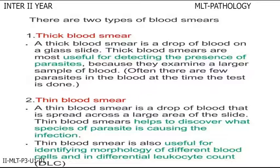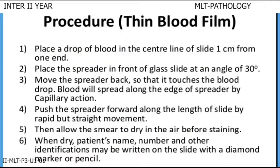Thin blood smear is a drop of blood placed in the center line of the slide, 1 cm from one end. Place the spreader in front of the glass slide at an angle of 30 degrees. Move the spreader back so that it touches the blood drop; blood will spread along the edge of the spreader by capillary action. Push the spreader forward along the length of the slide by a rapid but straight movement. Then allow the smear to dry in the air before staining.